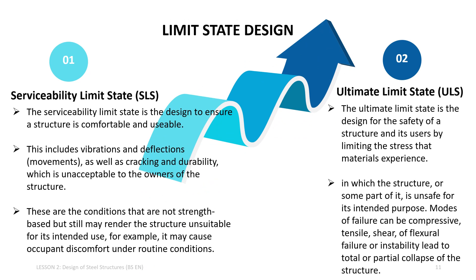The concept of limit state design was first applied in Russia in the 1930s and consists of two aspects: serviceability limit state and ultimate limit state. Serviceability limit state is a condition — for example deflection, vibration, or cracking — which is unacceptable to the owners of the structure. Ultimate limit state is where the structure, or some part of it, is unsafe for its intended purpose. Modes of failure can be compressive, tensile, shear, flexural failure, or instability leading to total or partial collapse of the structure.